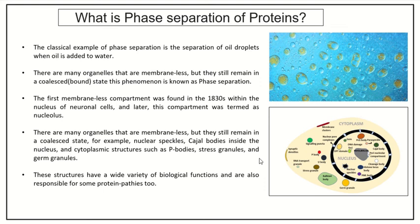What is phase separation of proteins? Phase separation means separation of two phases or entities when they are present in the same system. The classical example used to describe phase separation is separation of oil droplets when oil is added to water. In terms of biology, phase separation is the presence of membraneless organelles in a bound state, in which they exist as compact droplets even in the absence of a membrane. The nucleolus was the very first organelle to be discovered, followed by various others such as Cajal bodies, stress granules, P bodies, and germ granules.